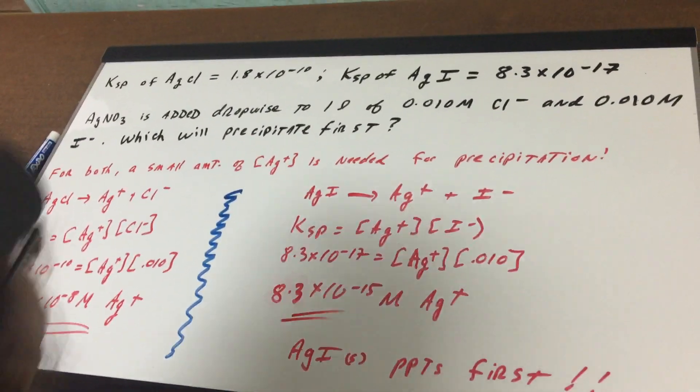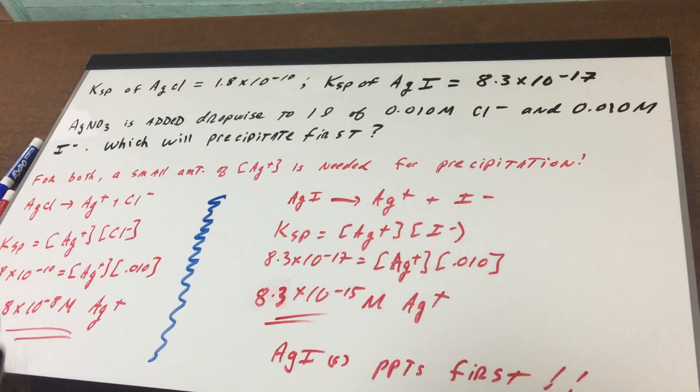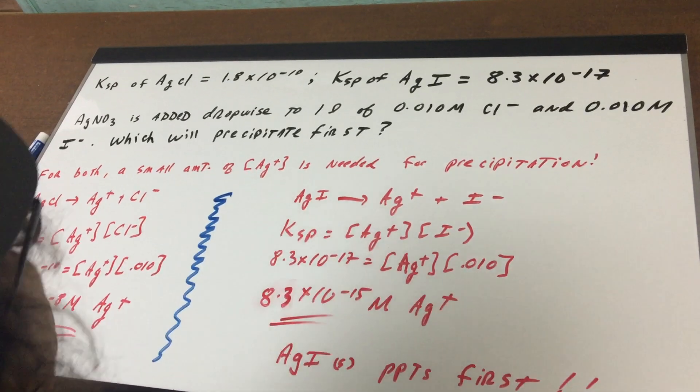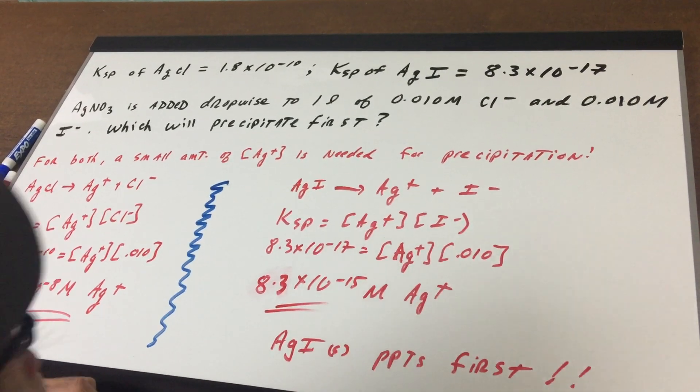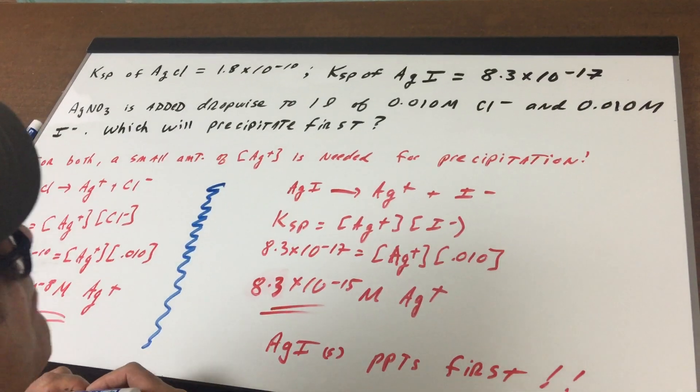This is a fast one, but it's going to drive home a very important concept. I give you the KSP of two salts: silver chloride, 1.8 times 10^-10, and silver iodide at 8.3 times 10^-17.